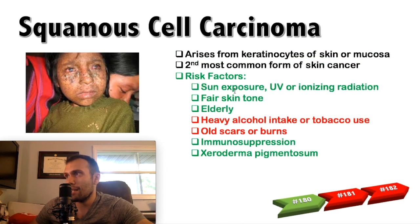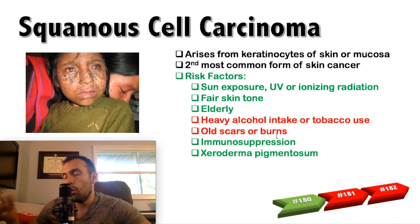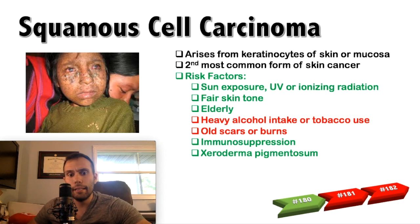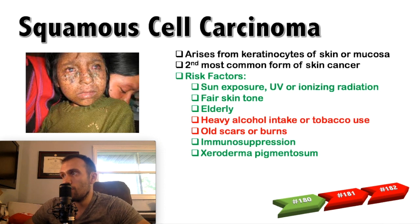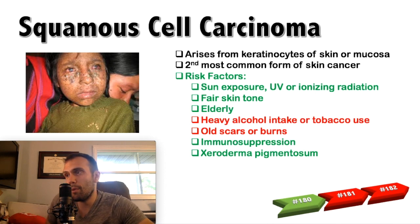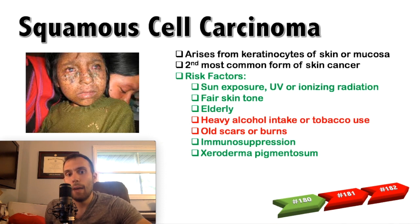Squamous cell carcinoma shares many risk factors with basal cell carcinoma: sun exposure, UV or ionizing radiation, fair skin. Additional risk factors more specific to squamous cell carcinoma include heavy alcohol intake or tobacco abuse, and old scars or burns — a painless or non-healing ulcer that's been sticking around, maybe growing, bleeding. Immunosuppression is also a classic risk factor; in a board question, this often involves a patient who had a recent organ transplant, now on immunosuppressants, presenting with a new growing skin lesion. Immunosuppressed patients with squamous cell carcinoma have increased risk of local recurrence and regional metastasis.